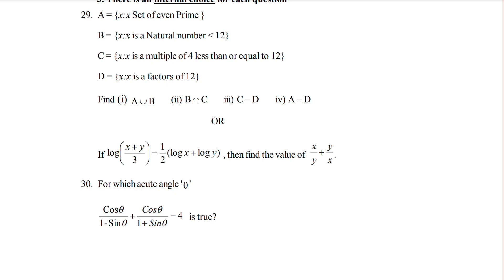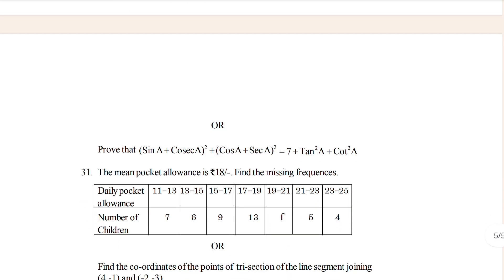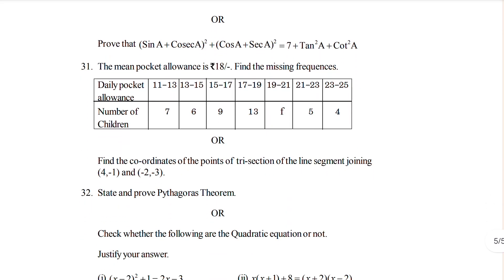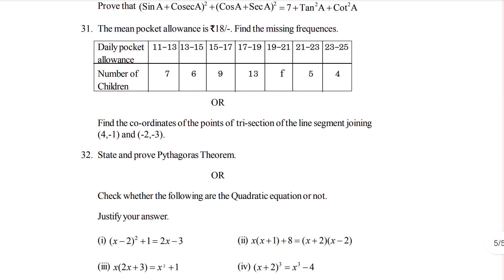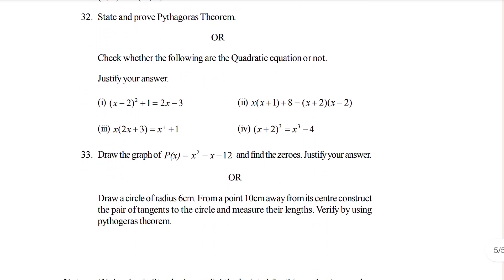You can see question 31: for which acute angle theta, cos theta over 1 minus sin theta equals 4, is this true? After that, prove that sine A plus cosine A squared plus cos A plus secant A equals 7 plus 10 secant. This is also important according to your recommendation.